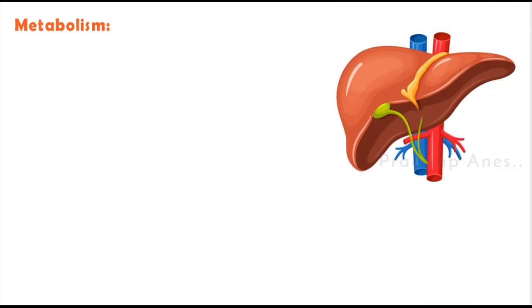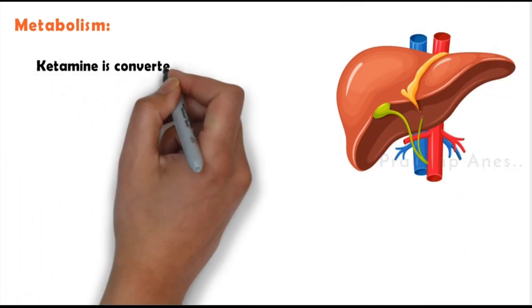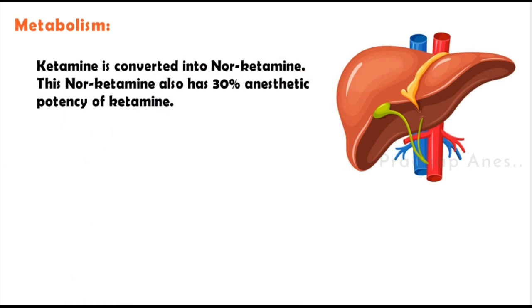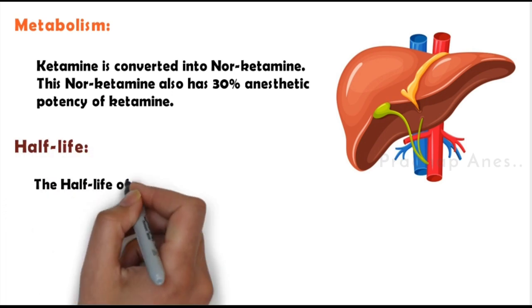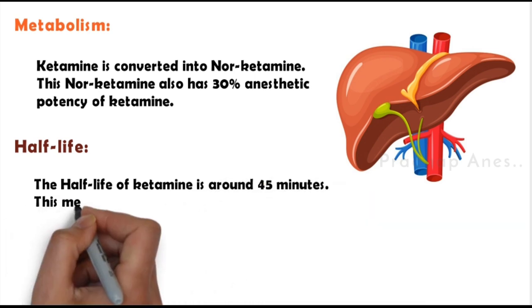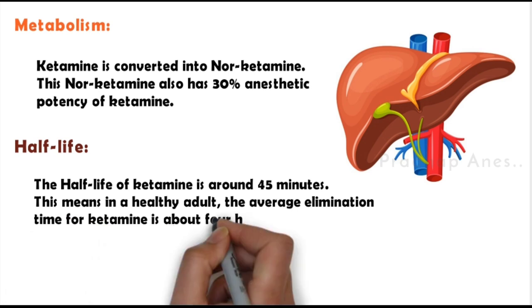Metabolism: When we give ketamine, either intravenous or intramuscular, it goes to the liver where it is converted into norketamine. This norketamine also has 30% of the anesthetic potency of ketamine. The half-life of ketamine is around 45 minutes, meaning the average elimination time in a healthy adult is about 4 hours and 30 minutes.